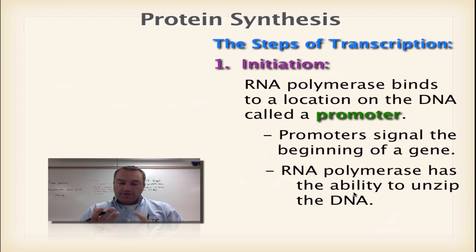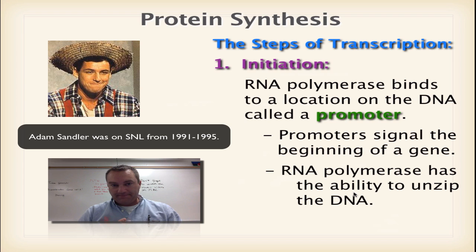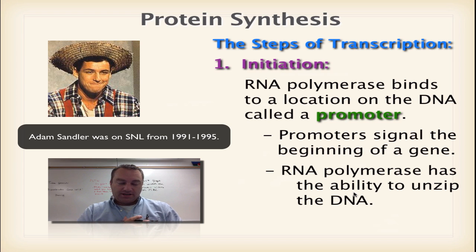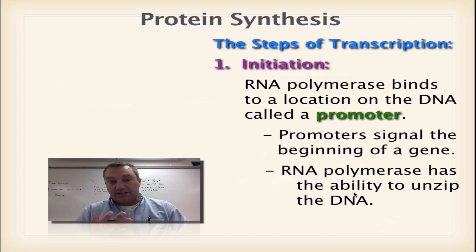There are three steps to transcription: initiation, elongation, and termination. This chapter kind of reminds me of the Cajun Man from Saturday Night Live, because everything ends with '-tion.' So we have transcription with three steps: initiation, elongation, and termination.